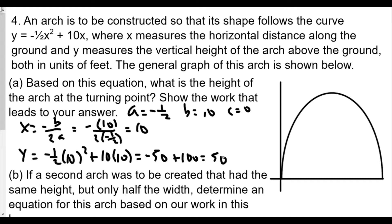So negative 50 plus 100 is 50. So 50 feet. So the turning point or the vertex is going to be 10, 50. And that's how we find our first part of this question.